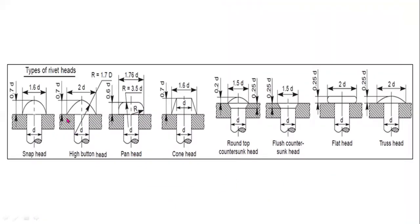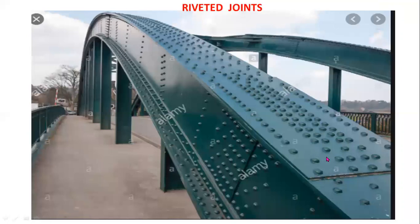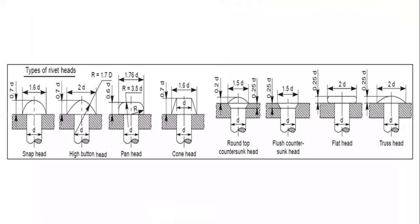These are the different types of rivet heads. You can observe the various rivet heads. These include the snap head, high button head, pan head, cone head, round top countersunk head, flush countersunk head, flat head, and truss head. These are the important types of rivet heads, and all are used for industrial purposes.